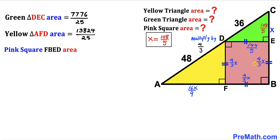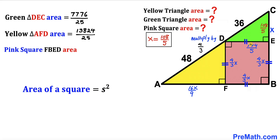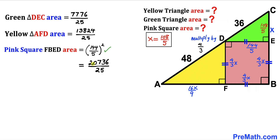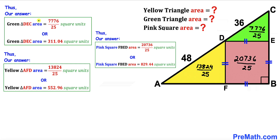Finally, let's calculate the area of the pink square FBED. Using the formula Area = s², where s is the side length: the side length is 144/5, so the area = (144/5)² = 20,736/25. Here are our three answers: green triangle = 7776/25, yellow triangle = 13,824/25, and pink square = 20,736/25, expressed as fractions and their decimal equivalents.